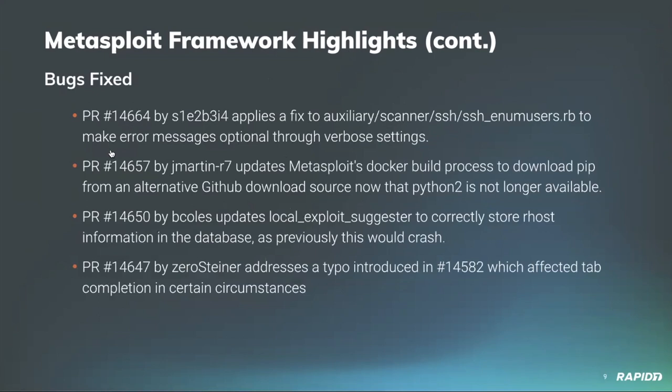We had a few bugs fixed. S1E2B3I4 applied a fix to the auxiliary scanner SSH in Nooms, making error messages optional through verbose settings — so the module won't print error messages for every user that can't log in. Jeffrey Martin updated Metasploit's Docker build process to download pip from an alternative hub download source, since Python 2 is no longer available.